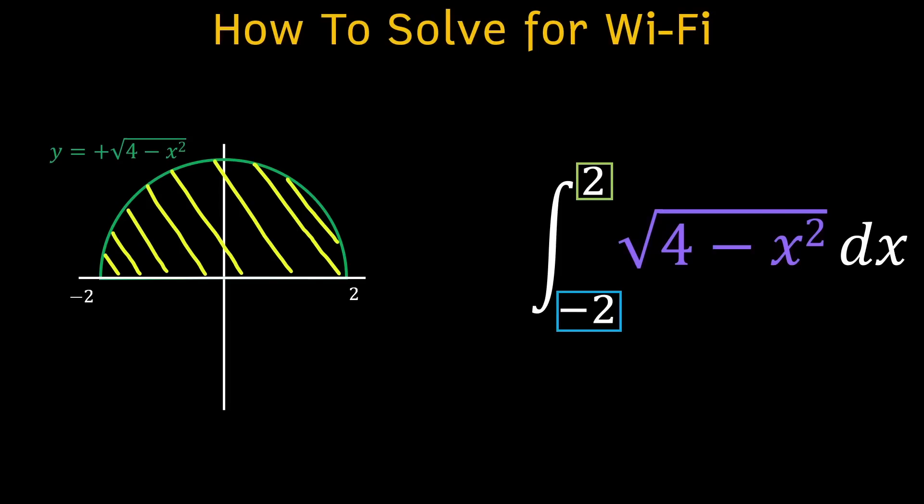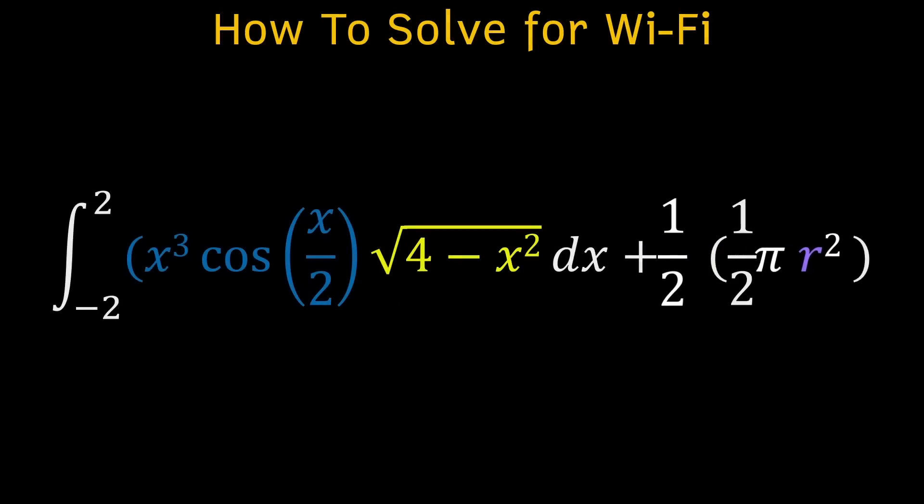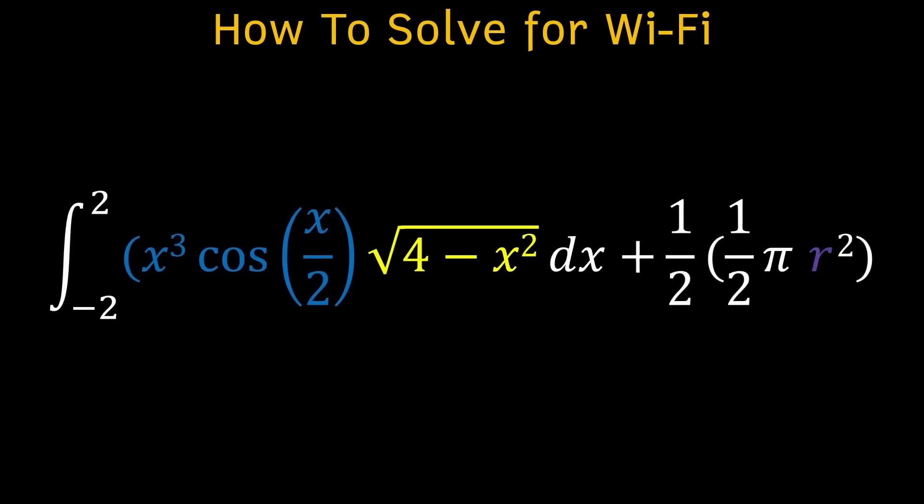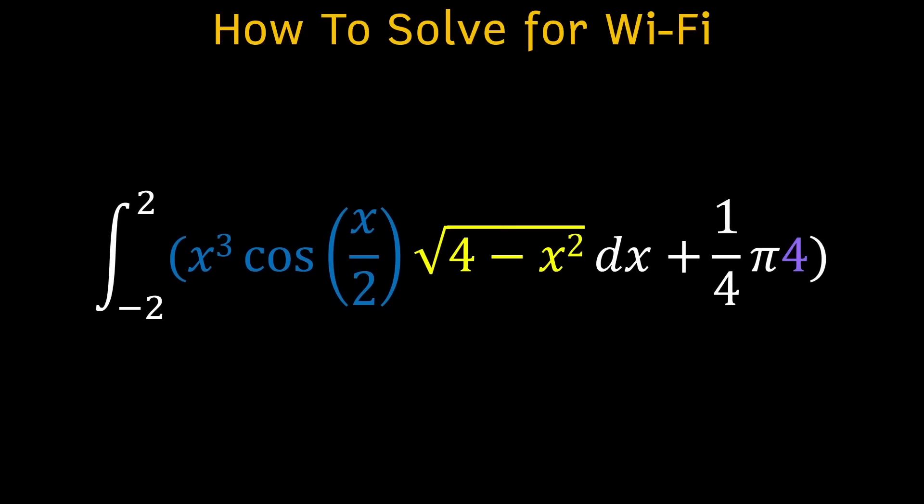And because we know the area of a semicircle is just one half pi r squared, we can substitute the integral with that formula and barely have to do any calculus to get rid of it. Moving forward, our next step is to plug our radius of 2 into the formula and get 1 fourth times pi times 4. The 4's cancel out and we're left with pi.